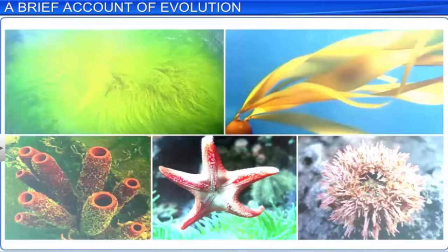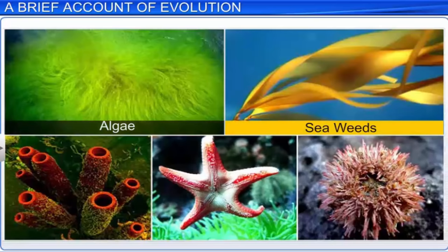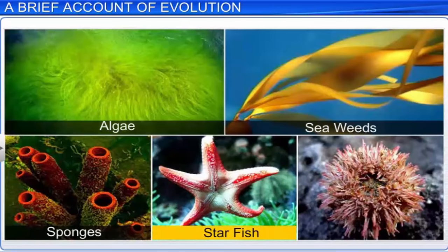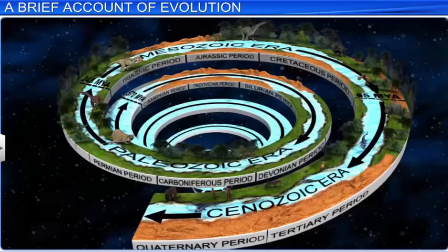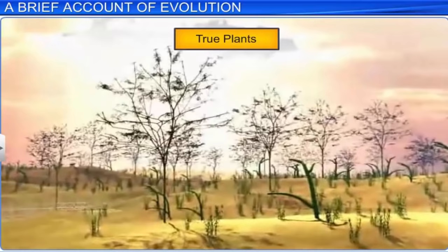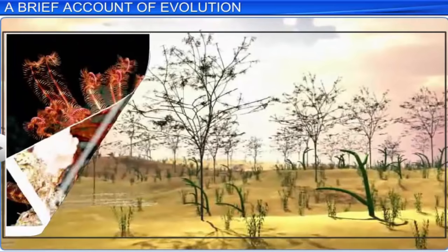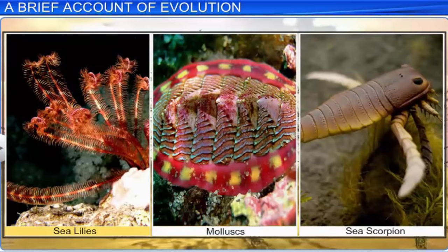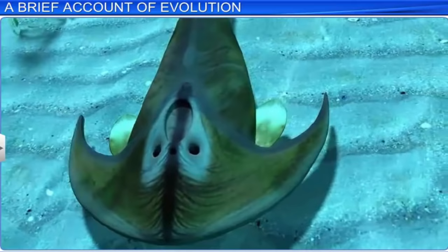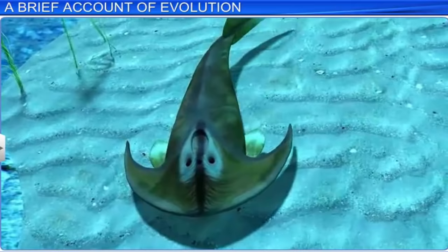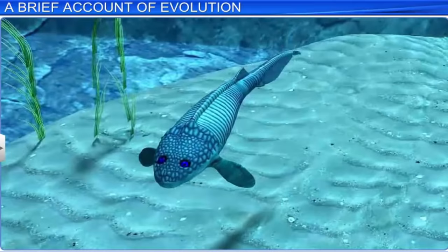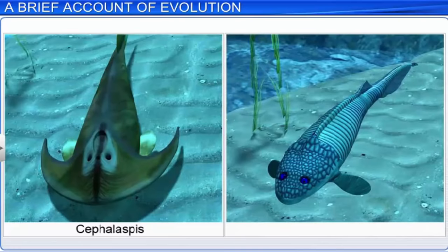In the Cambrian period, plant life consisted of primitive algae and seaweeds, while animal life consisted of invertebrates such as sponges, starfish, and sea urchins. In the Ordovician and Silurian periods, new plants with a stem, leaves, and roots developed. At the same time, there was an increase in the population of animals such as sea lilies, mollusks, and sea scorpions. The Ordovician period also marked the evolution of the first vertebrate, the jawless fish, around 350 million years ago, for example Cephalaspis and Hemicyclaspis.